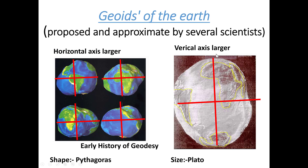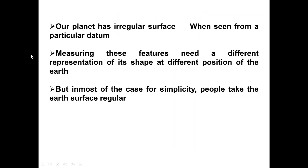So this is the vertical axis. Now we can see how these different axes are in the same direction. Our planet has a regular surface when seen from a particular angle, which is not a perfectly regular surface. Measuring these features needs a different representation of different positions. In this case, we have a regular column measure and reference.